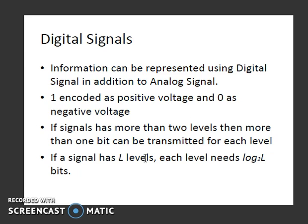Coming to digital signals — we have seen analog signals, and in the same way information can be represented using digital signals also. Here, one will be encoded as positive voltage and zero as negative voltage. This is actually positive logic. So if a signal has more than two levels, then more than one bit can be transmitted for each level.